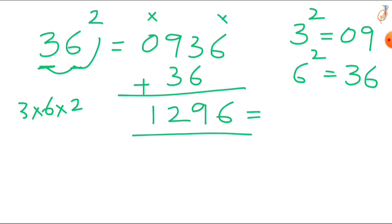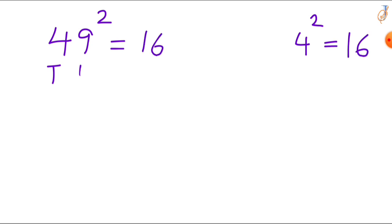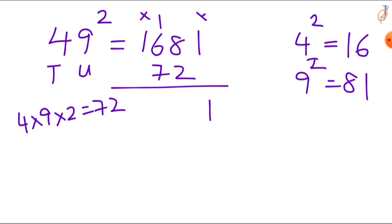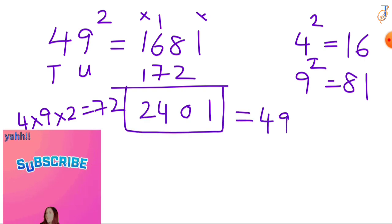Adding: 6, 6 plus 3 is 9, 9 plus 3 is 12. So 36 squared is 1296. Now 49 squared: square the tens digit — 4 squared is 16, write 16. Square the units digit — 9 squared is 81. Multiply: 4 times 9 is 36, 36 times 2 is 72. Write that and add the digits: 1, 2 plus 8 is 10, 7 plus 1 is 8, 8 plus 6 is 14. So 49 squared is 2401.